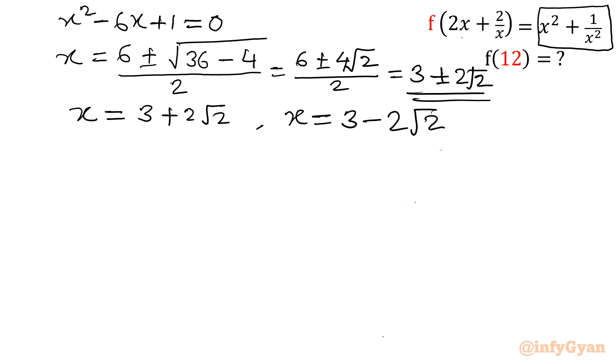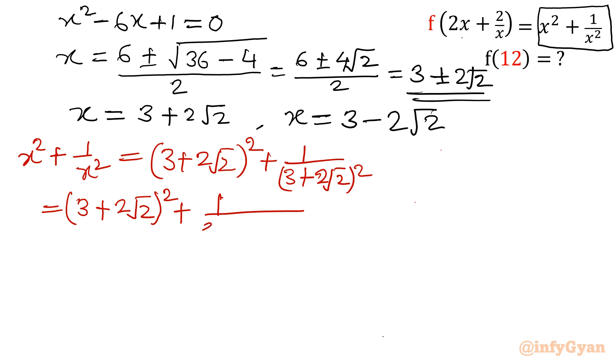Let me write x² + 1/x². That value will be (3 + 2√2)² + 1/(3 + 2√2)². Okay. So 3 plus, you know, the complex and irrational roots comes in conjugation. They used to come in conjugation always. So this is irrational. See 3 + 2√2. So what I am going to do, I am just going to rationalize this by multiplying its conjugate.